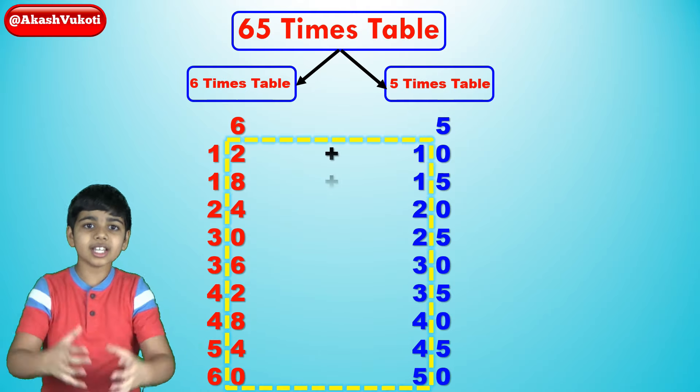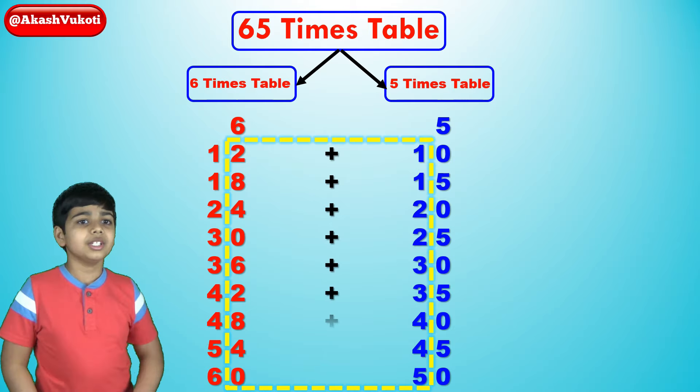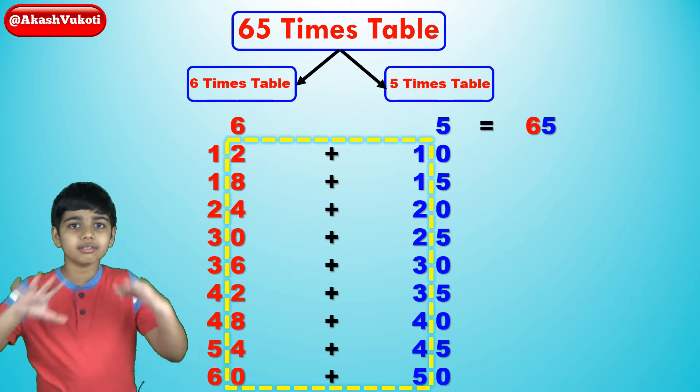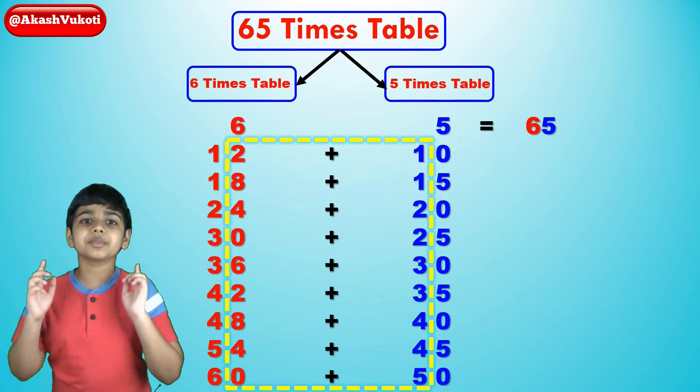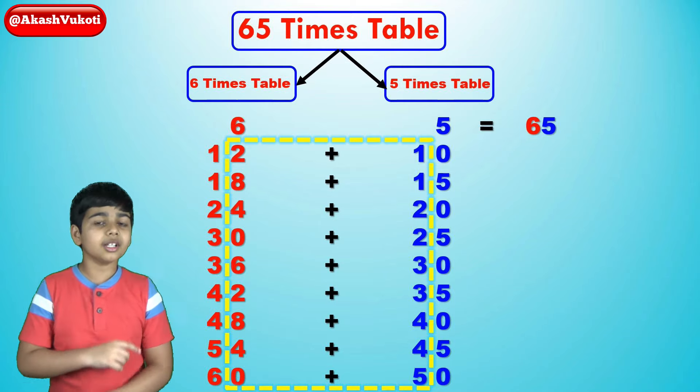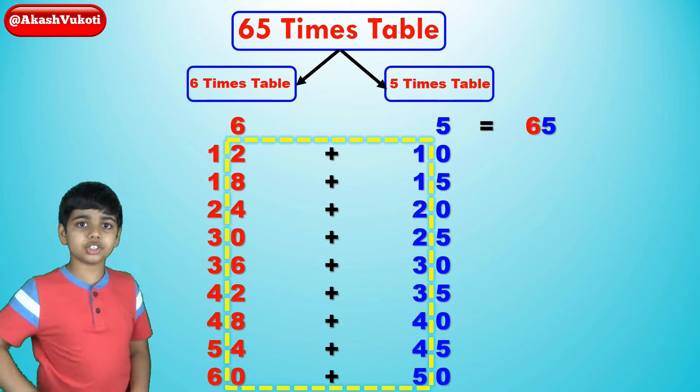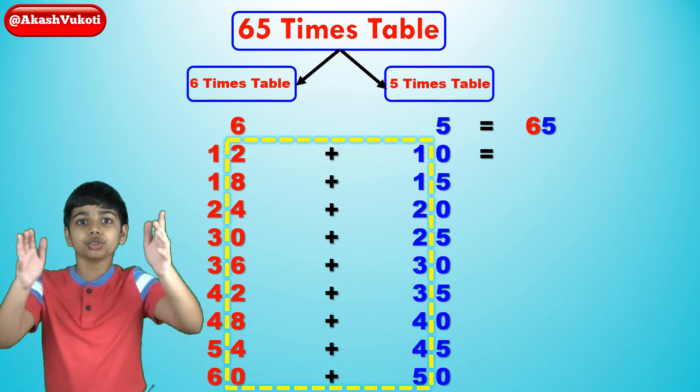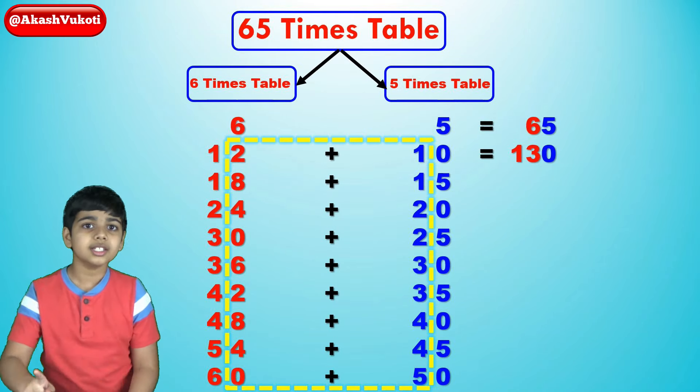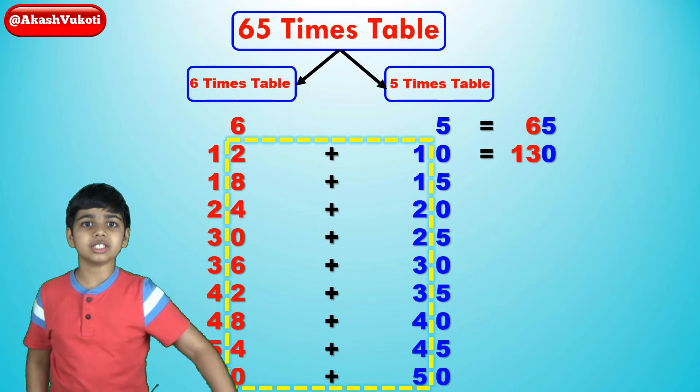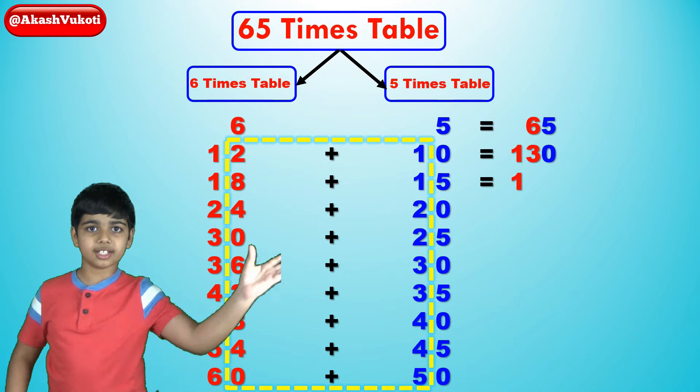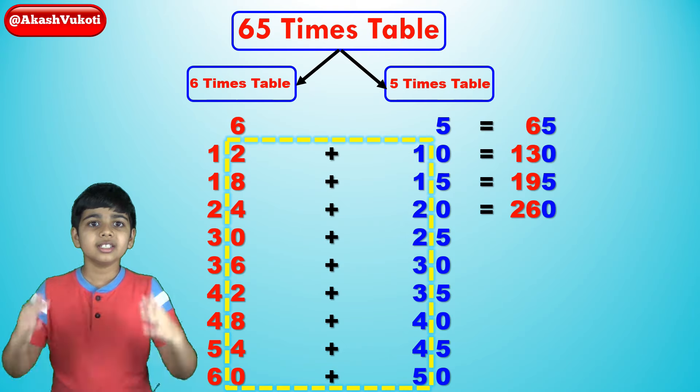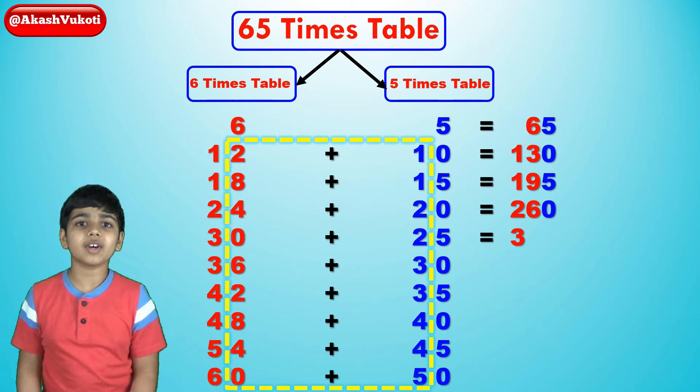Now, just put all of these answers together and that is the 65 times table. Take a look right here. See, 65 times 1 is 6, 5, 65. That's normal. Then 65 times 2 is 12, 10. But look here, 10 is 2 digits. We've got a 1 digit space there. So, instead what we do is add the 1 to the 12. So, 12 plus 1 gets 13. So, it becomes 130. Then 65 times 3 is 18, 15. 18 plus 1, 19. So, it becomes 195. 65 times 4 is 24, 20. That becomes 260. 65 times 5 becomes 30, 25, 325.